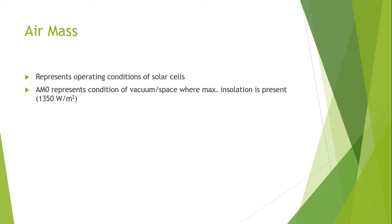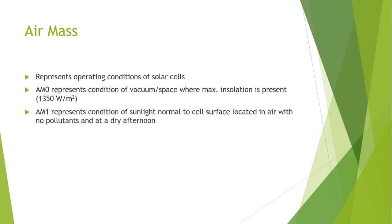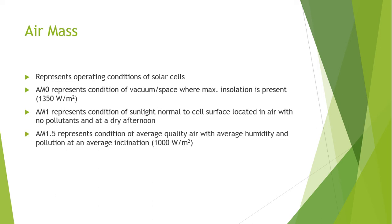There are different intensity levels: AM0 represents the condition of vacuum space where maximum insolation is present at 1350 watts per meter squared. AM1 represents the condition of sunlight normal to the cell surface located in air where there are no pollutants and the afternoons are dry. AM1.5 represents the condition of average air quality with average humidity and pollutants at an average inclination of about 1000 watts per meter squared. For northern areas it is AM4, with solar radiation at 15 degrees from the origin.